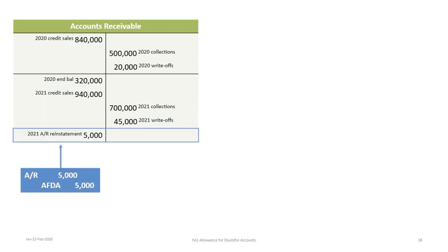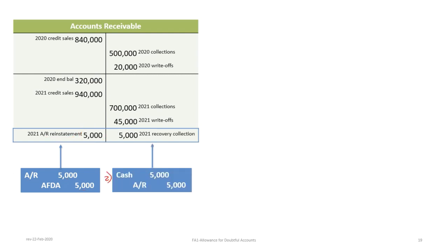During the year there were recoveries — the company recovered $5,000 in previously written-off accounts receivable. The correct approach is first to reverse the write-off by reinstating the $5,000 back into accounts receivable (debit AR, credit AFDA), then record the cash collection as a second entry. Although the accounts receivable nets to zero across both entries, the correct approach is to record it in two steps.